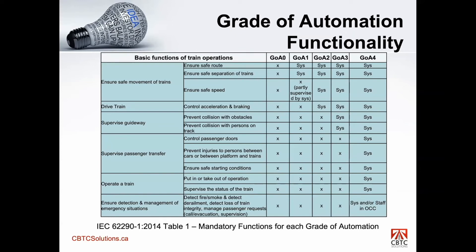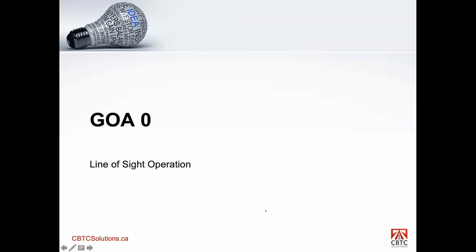This is a table taken right out of the standard, 62290 — it's Table 1. It lists all of the mandatory functions for each grade. If you look at GoA 0, what qualifies it as GoA 0 is basically all of these functions, or the lack of them in this case. In order to define a GoA 1 system, it's the first three functions listed in this table. If those are implemented, that's considered GoA 1, and so on — GoA 2, GoA 3, and GoA 4. I'll describe each one of these functions in more detail as we go further, but I just wanted to flash this table up so everyone understands the functions we're going to be discussing here.